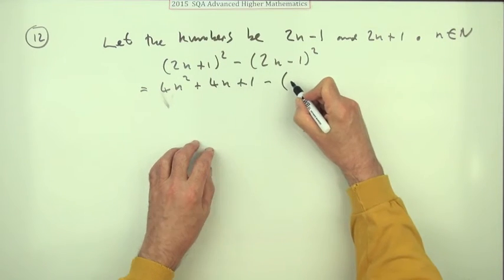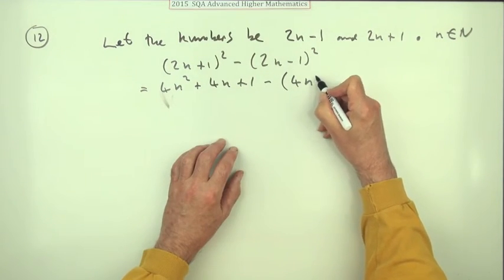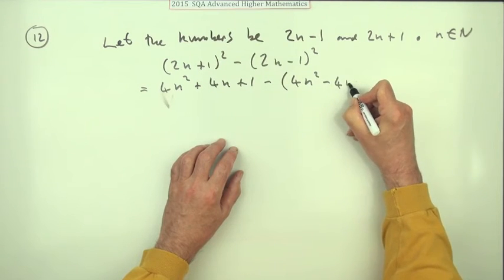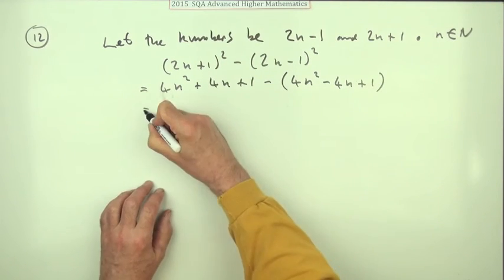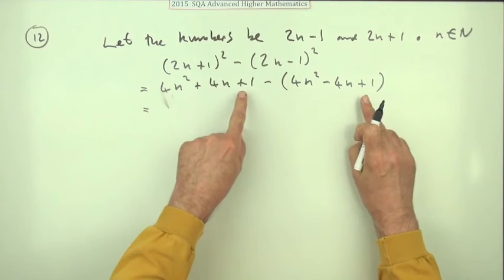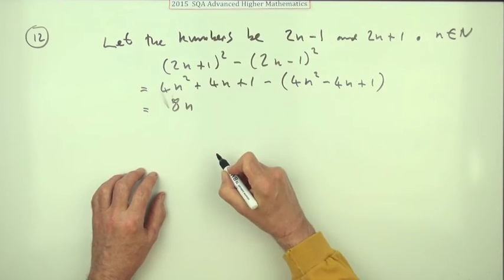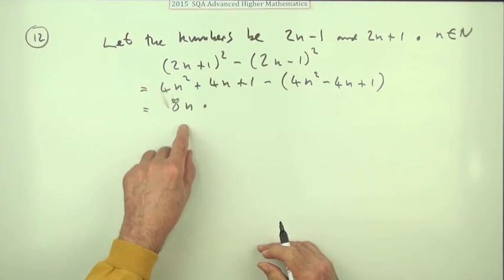Minus, maybe I'll put it in a bracket for safety. Same again only with a minus in the middle. 4n squared minus 4n plus one. So they cancel and they cancel and that becomes 8n. That's a mark for getting the expression for the difference.